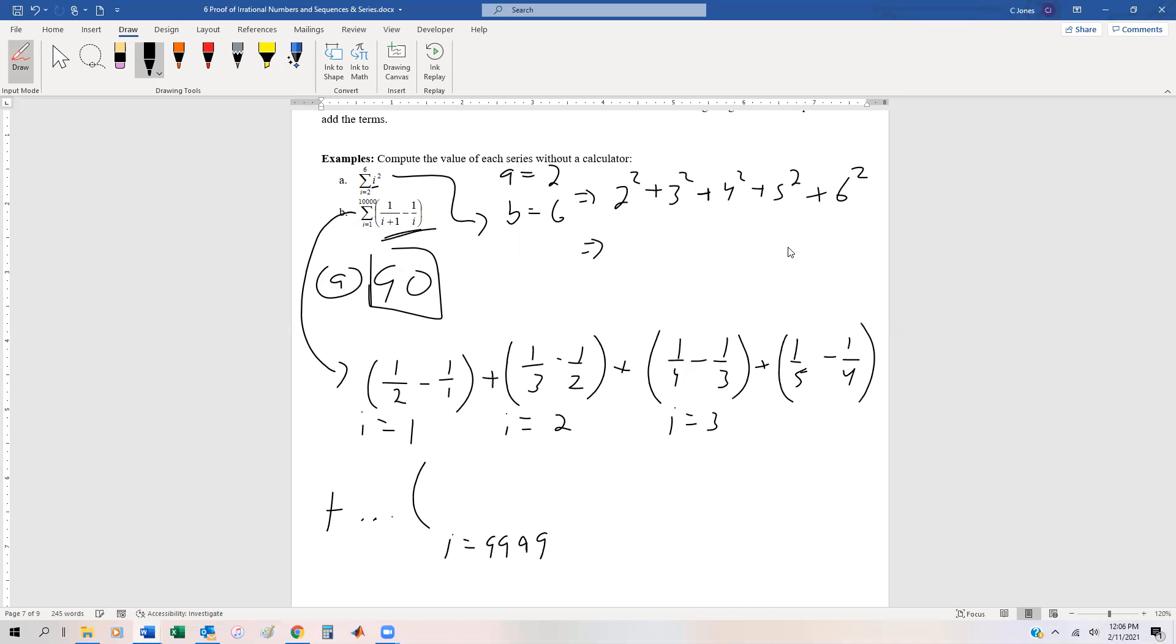Let's have i equals 9,999, which would be one over 10,000 minus one over 9,999. And then plus i equals 10,000, that's going to be one over 10,001 minus one over 10,000.